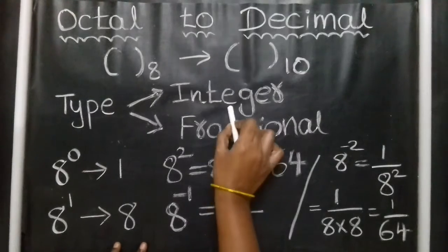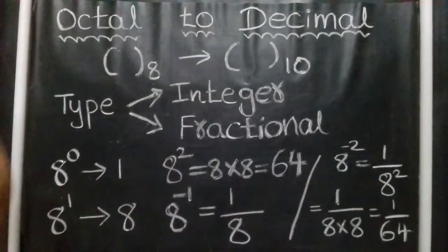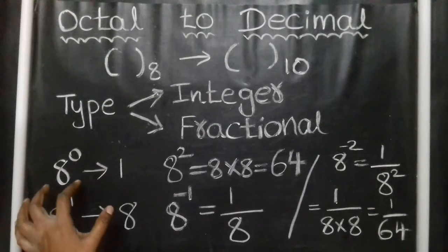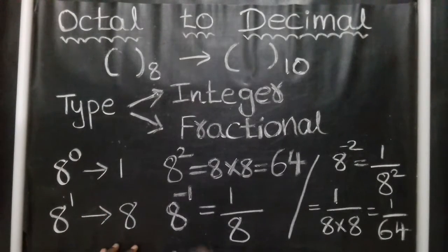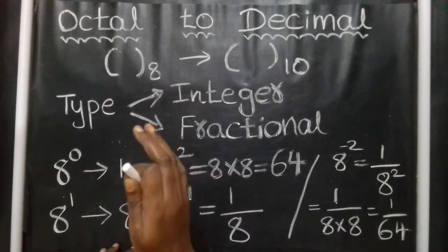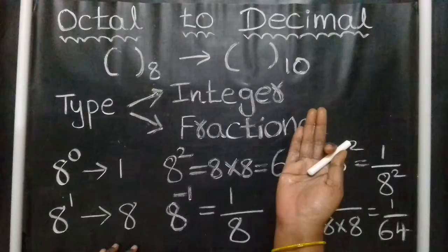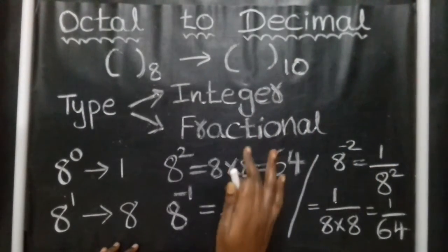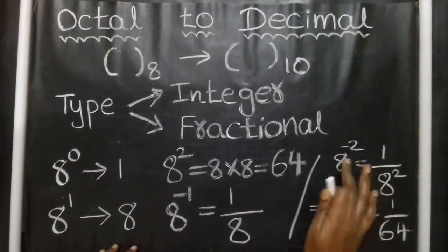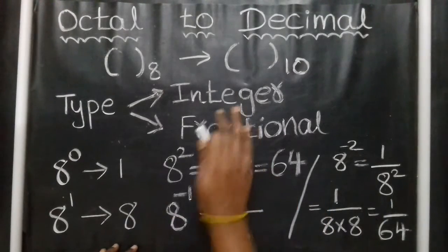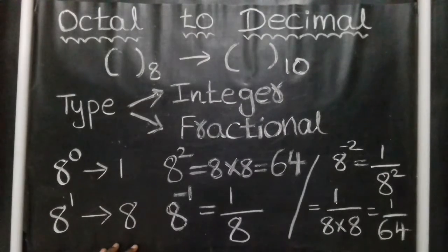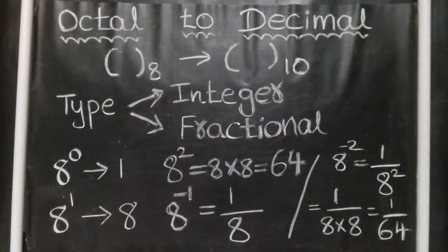In the integer part — that is, to the left of the decimal point — the powers of 8 are positive. Whereas to the right of the decimal point, the powers of 8 are negative. So in the fractional part, the powers of 8 are negative. The integer part uses positive powers, and the starting power for the fractional part begins at minus 1.